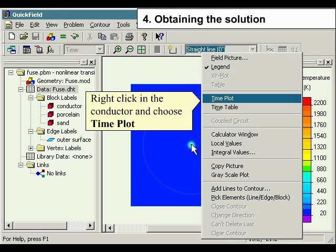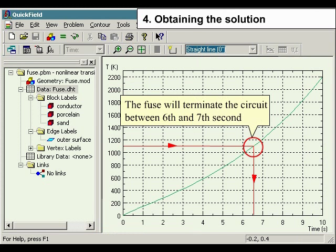Right-click on the conductor and choose Time Plot. The fuse will terminate the circuit between the 6th and 7th second.